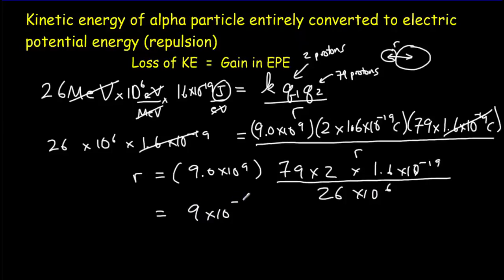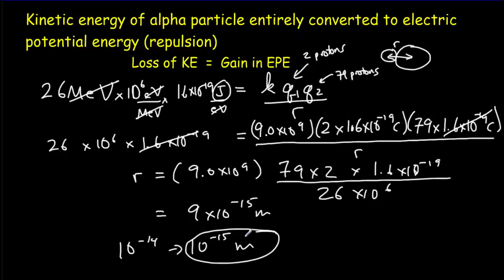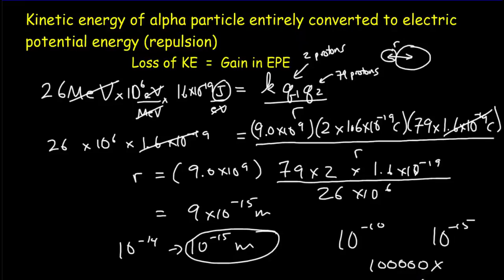The result is approximately 9 × 10⁻¹⁵ meters. This is really an order-of-magnitude estimate, somewhere between 10⁻¹⁴ and 10⁻¹⁵ meters, generally taken as 10⁻¹⁵ meters. The size of an atom is typically about 10⁻¹⁰ meters, so the atom is about 100,000 times bigger than the nucleus — roughly the same scale ratio as the diameter of a football stadium to the diameter of a marble.